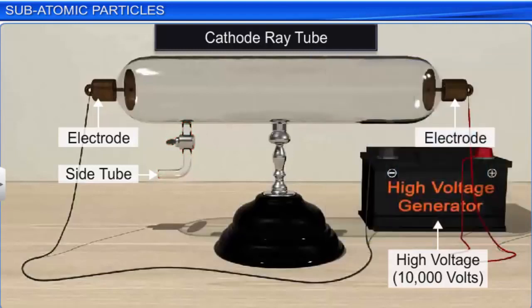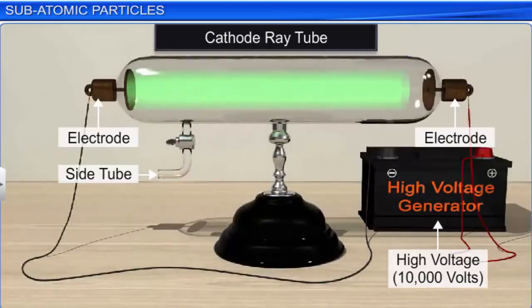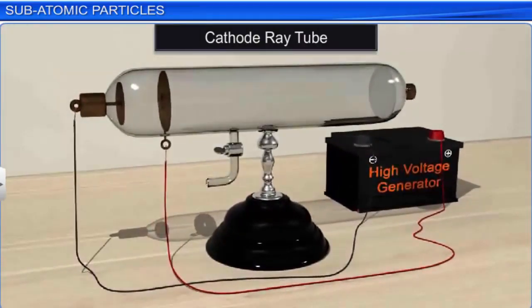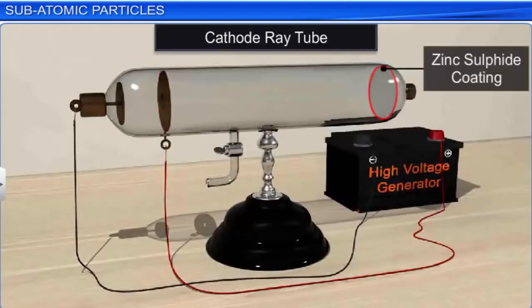Crookes observed that at a low pressure of 0.01 atm, when a high voltage of 10,000 volts is applied across the electrodes of the discharge tube, current starts flowing inside the tube. To further study the behavior of this current, he punctured the anode inside the cathode ray tube and coated the glass tube behind the anode with a fluorescent material such as zinc sulfide, and then repeated the experiment.